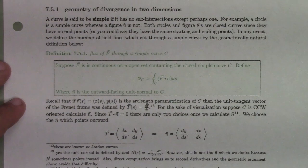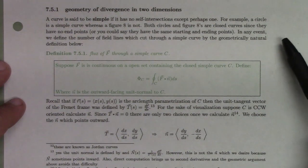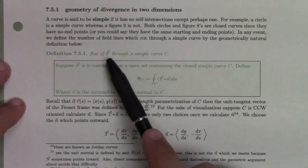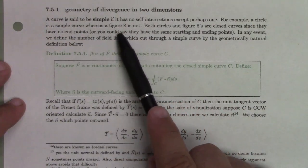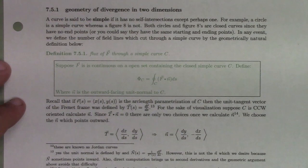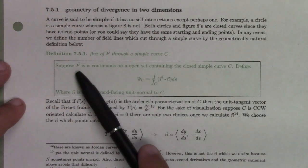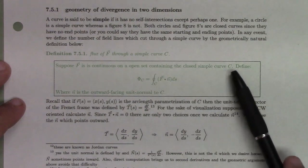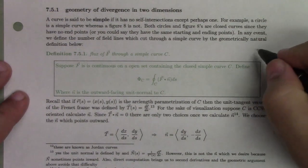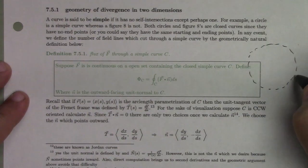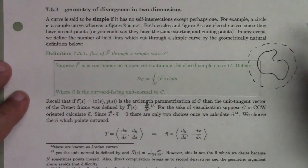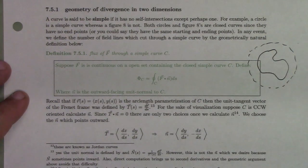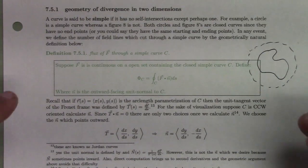To start, we need to understand the idea of flux of a vector field through a curve. A curve is said to be simple if it has no self-intersections — like a circle is a simple curve, whereas a figure 8 is not. If the curve is simple and you have a continuous vector field on an open set a little bit bigger than the curve, then you can calculate the flux of the vector field through that curve.